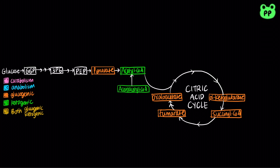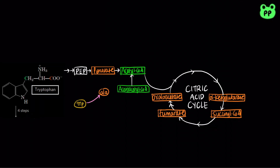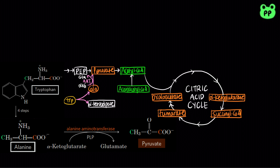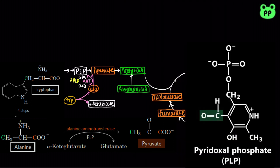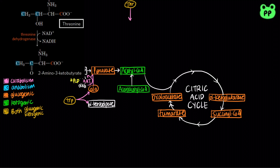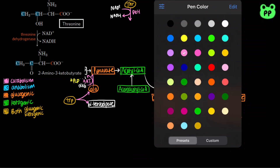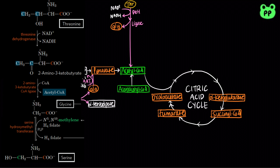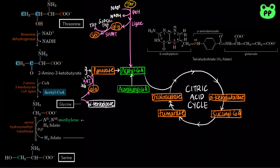Six amino acids are degraded in whole or in part to pyruvate. Tryptophan can be cleaved to produce alpha-ketoadipate and alanine, which can interconvert with pyruvate by alanine aminotransferase, abbreviated as AAT, which requires the coenzyme pyridoxal phosphate or PLP. There are two catabolic pathways for threonine. The minor one in humans involves oxidation by threonine dehydrogenase, abbreviated as TDH, which is coupled to the reduction of NAD+ to NADH, followed by cleavage by ligase, which produces glycine and acetyl-CoA. Glycine is then converted to serine by serine hydroxymethyltransferase, abbreviated as SHMT, which requires pyridoxal phosphate and a one-carbon donor, methylene tetrahydrofolate, which is in turn converted to tetrahydrofolate, abbreviated as THF.